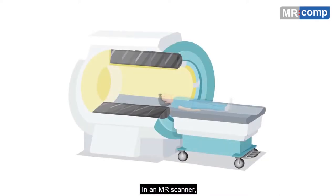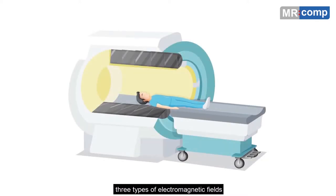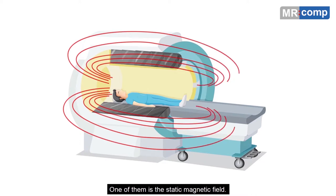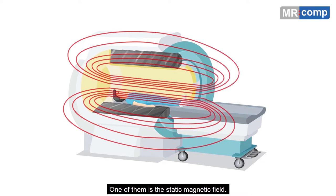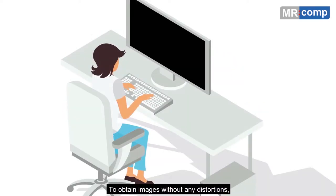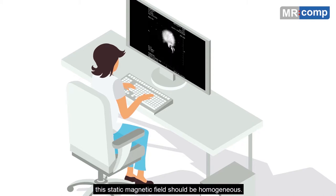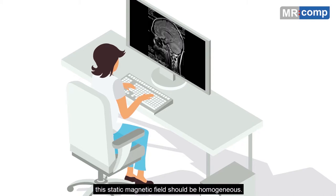In an MR scanner, three types of electromagnetic fields are involved in imaging. One of them is the static magnetic field. To obtain images without any distortions, this static magnetic field should be homogeneous.